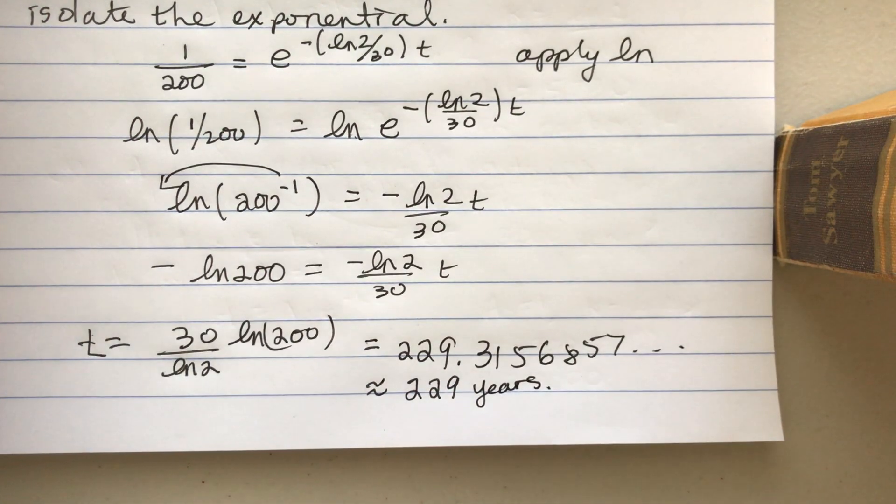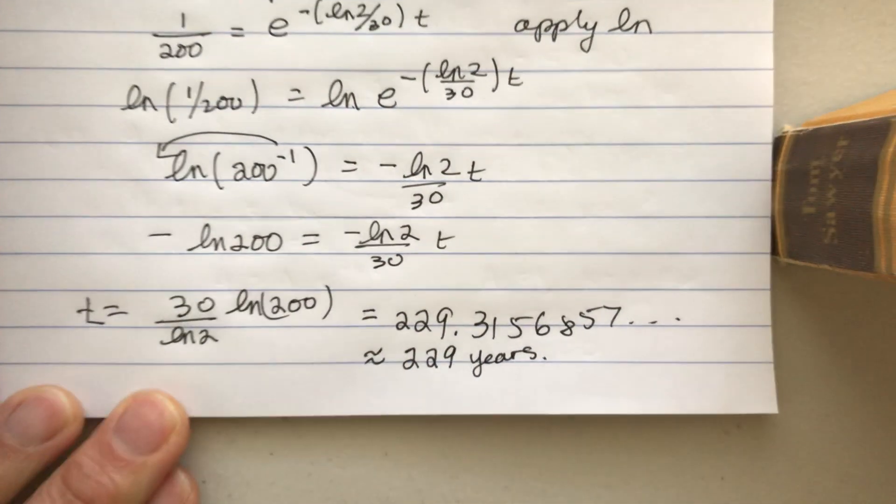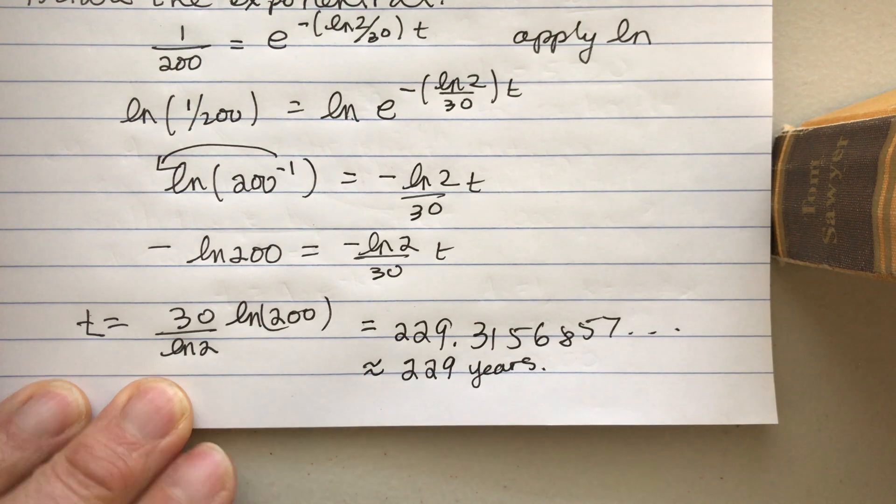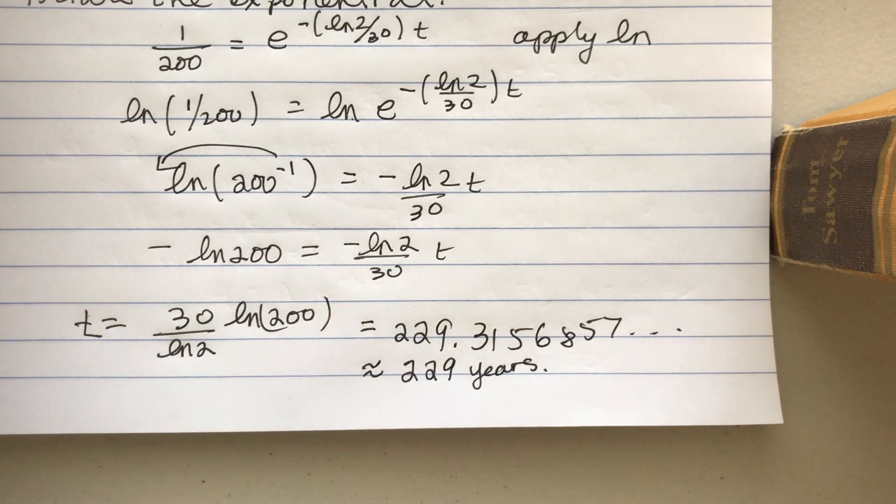So if you start off with 200 milligrams, you still have one milligram after 229 years.